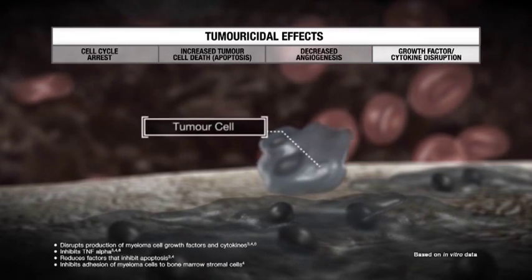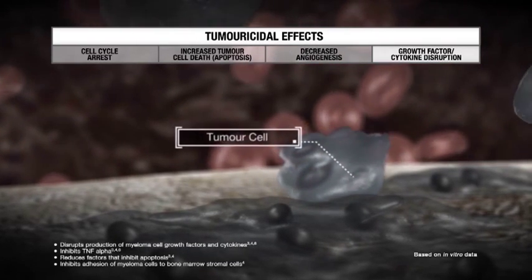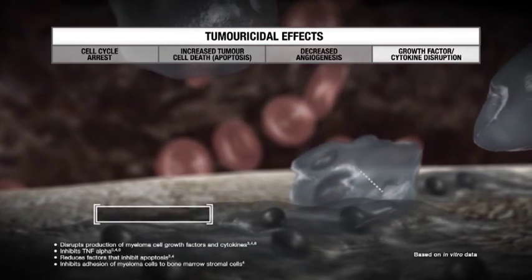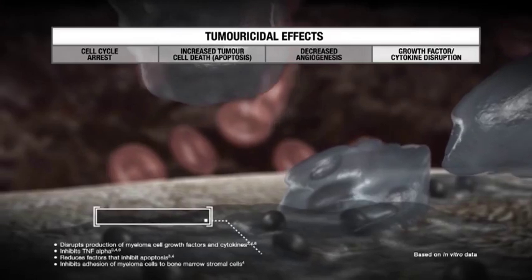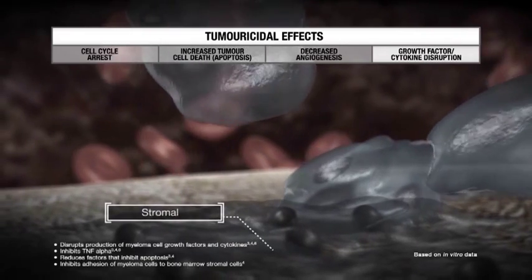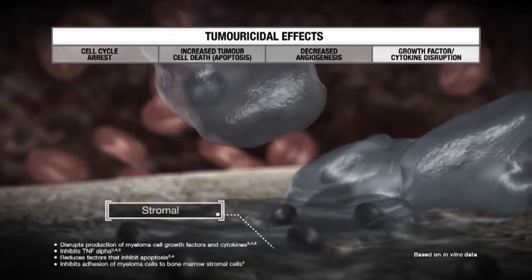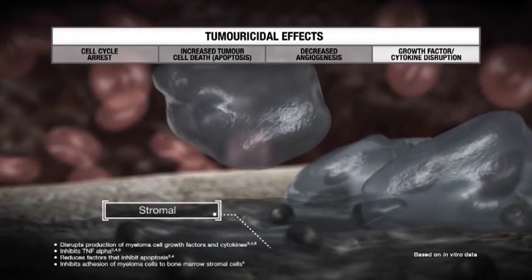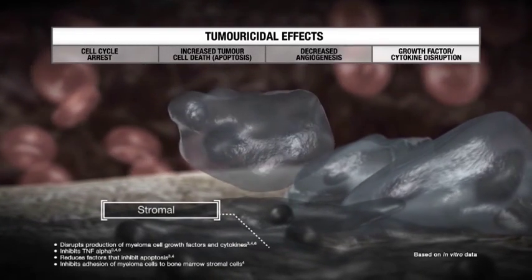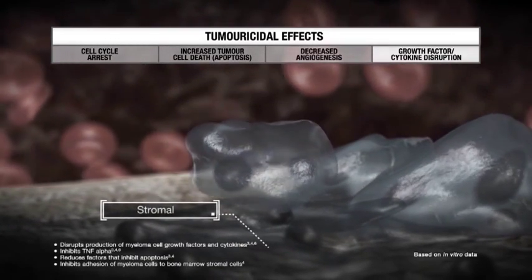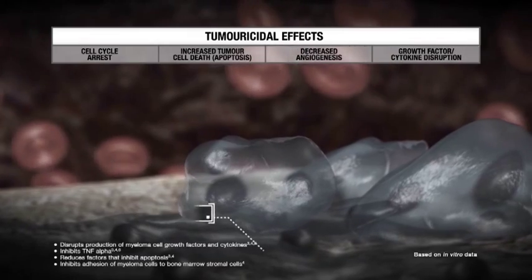Finally, Revlimid inhibits the adhesion of myeloma cells to bone marrow stromal cells by reducing levels of cell surface adhesion molecules.